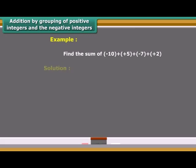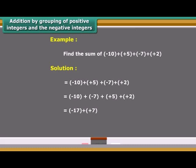For better understanding, we can solve one example. We arrange the numbers so that the positive integers and the negative integers are grouped together.